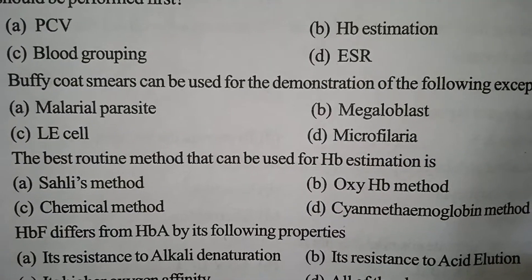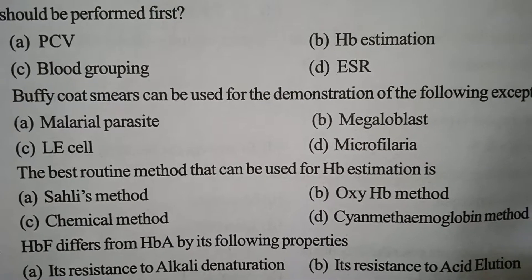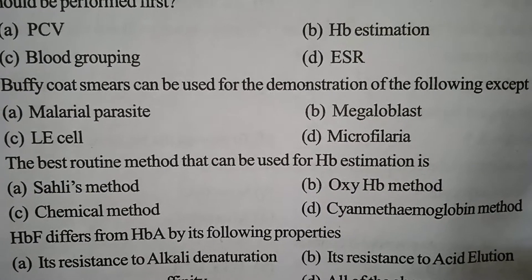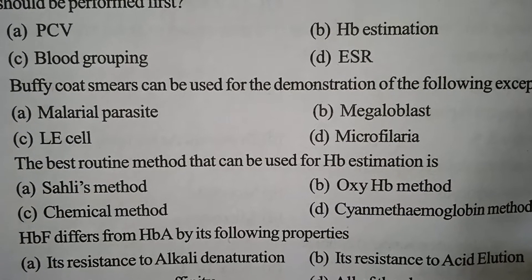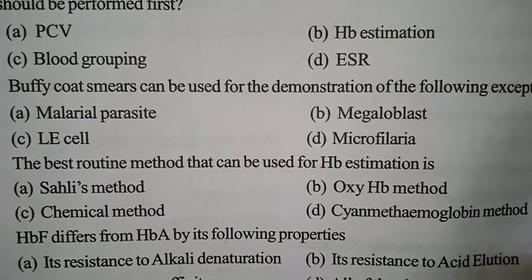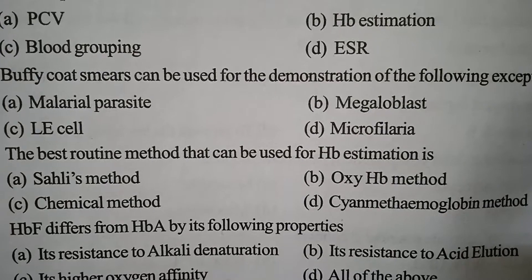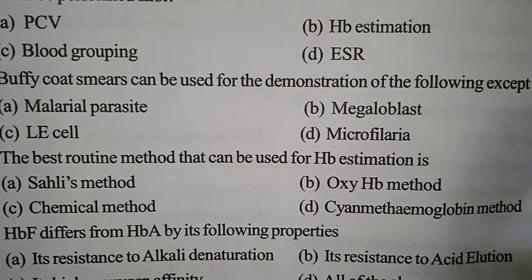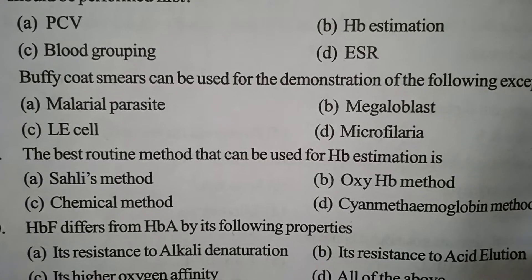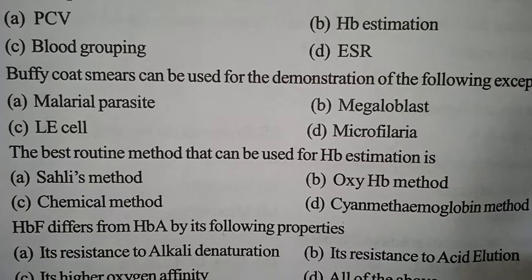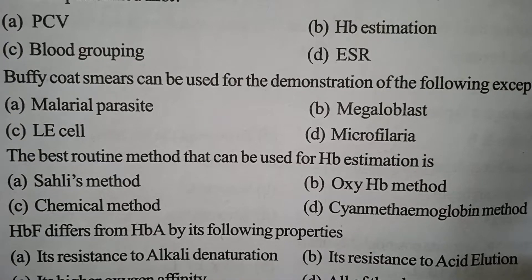Next one. The best routine method that can be used for Hb estimation is: Option A: Sahli's method. Option B: Oxyhemoglobin method. Option C: Chemical method. Option D: Cyanomethemoglobin method. Correct answer: The best routine method is the Cyanomethemoglobin method — Option D.